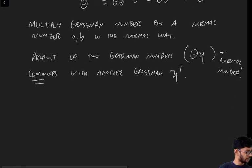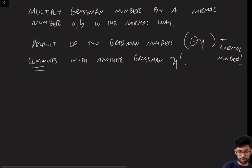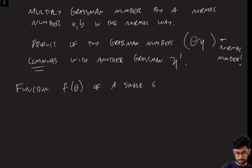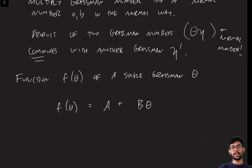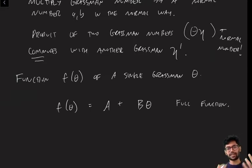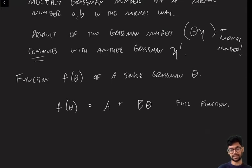Now let's consider a function of a single Grassmann number. Think about f(θ). We can Taylor expand f(θ) in powers of θ. There's a constant term a, a linear term bθ, and that's it — because θ² = 0. So the most general function f(θ) is described by just two bits of data, a and b. This is the first hint that the calculus of Grassmann numbers is very different from normal numbers.